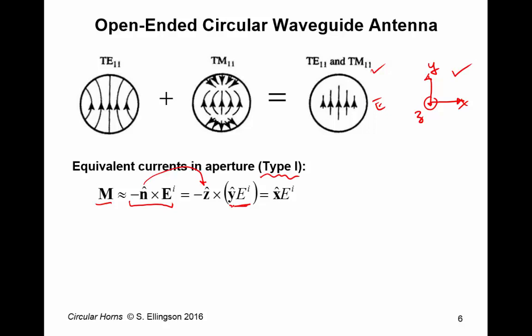So, we get that the magnetic currents are X-hat polarized. So, the magnetic currents go like this.